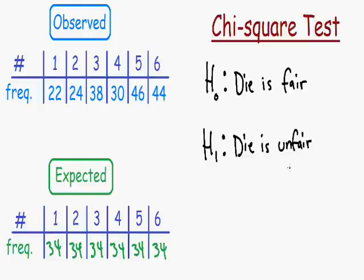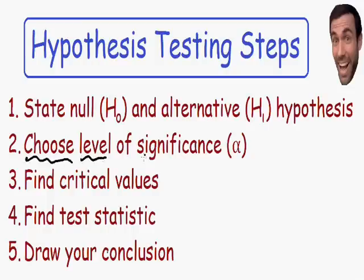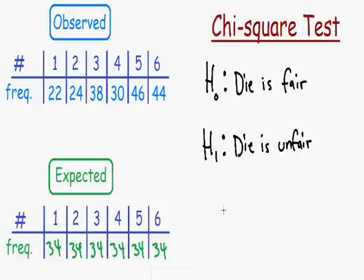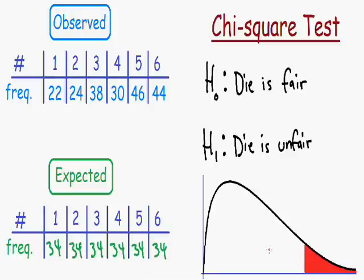Step number two says to choose the level of significance, written with the Greek letter alpha. The level of significance is just the area in the tail. Looking at a chi-square distribution curve, the level of significance is the area shaded in the tail. You can choose the level of significance if it's not given — usually it's between 0.01 and 0.05. The smaller the value, the more significant your results. Let's choose a level of significance of 0.01.